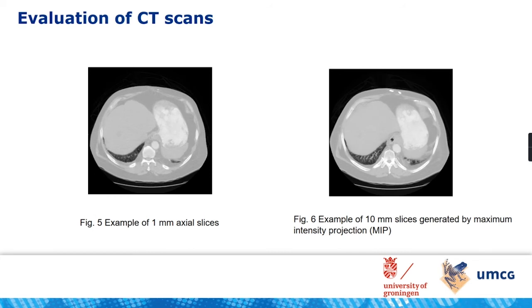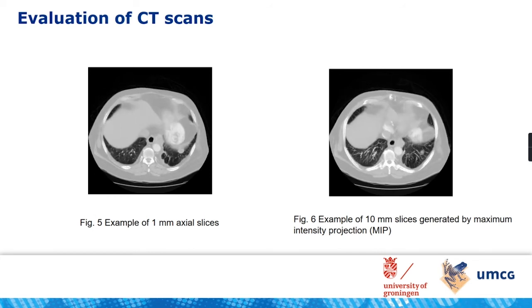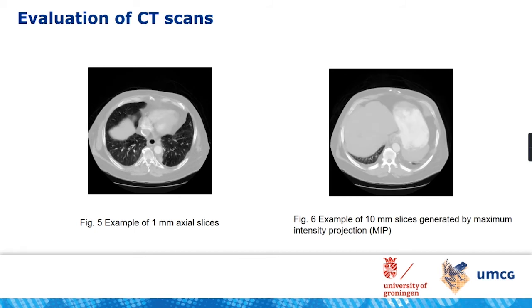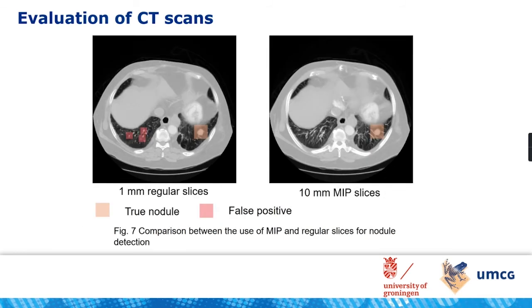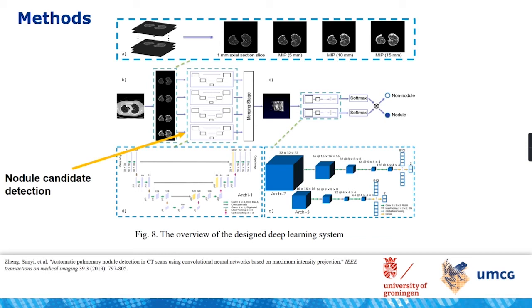MIP images are the superposition of maximum gray values at each coordinate from a stack of consecutive slices. Compared to 1 mm axial slices, MIP images show that nodules are more isolated and vessels are more continuous. You can also find that fewer false positives show up in MIP images. Inspired by this clinical procedure, we explored the feasibility of applying MIP images to improve automatic lung nodule detection using convolutional neural networks.